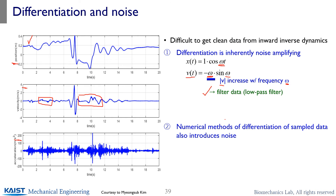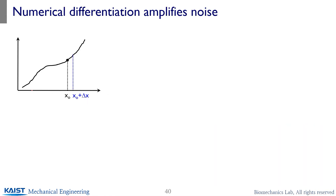Other than the inherited noise-amplifying issue, numerical differentiation also introduces its own error — I'll explain this in the next slide. Suppose these are your measurements and you want to find the time derivative at point x-naught. A rough estimation would be to calculate the slope between your measurement at x-naught and at x-naught plus delta-x, approximating it as f(x-naught + delta-x) minus f(x-naught), divided by delta-x.